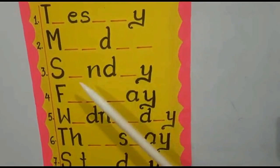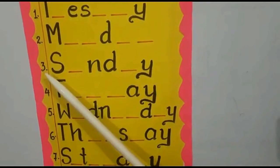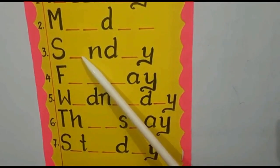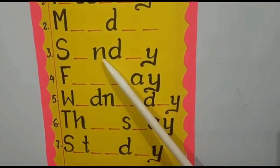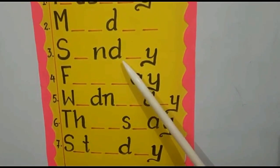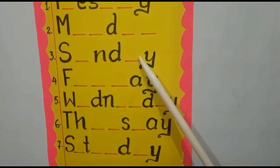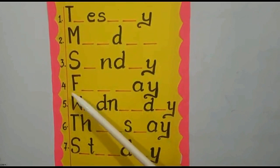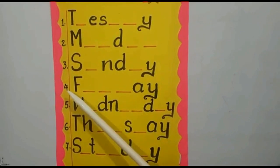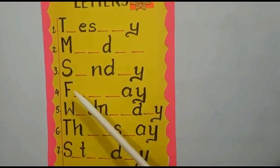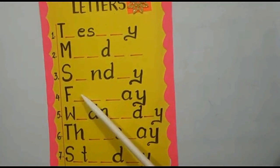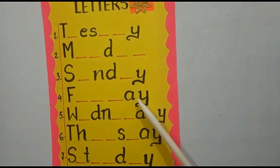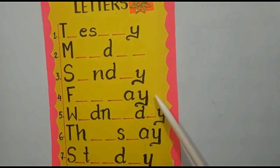Number one: S, missing letter U, N, D, missing letter A, Y — Sunday. Number four: O, F, missing letters R, R, D, A, Y — Friday.